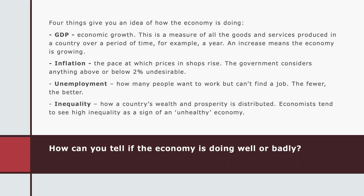The second indicator is inflation — the rate at which prices in shops rise. If you imagine inflating a balloon, inflation is supposed to be kept at a certain level so that things don't get too expensive. The government has historically considered anything above or below 2% undesirable, so a 2% increase in prices is the target. The third indicator is the level of unemployment — how many people want to work but can't find a job. For the economy, the fewer unemployed there are, the better.